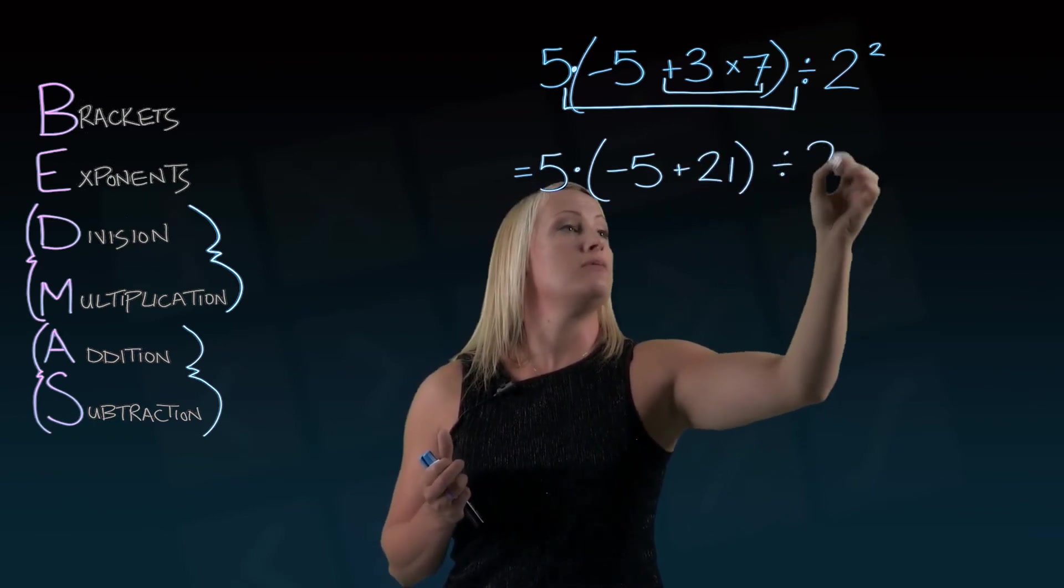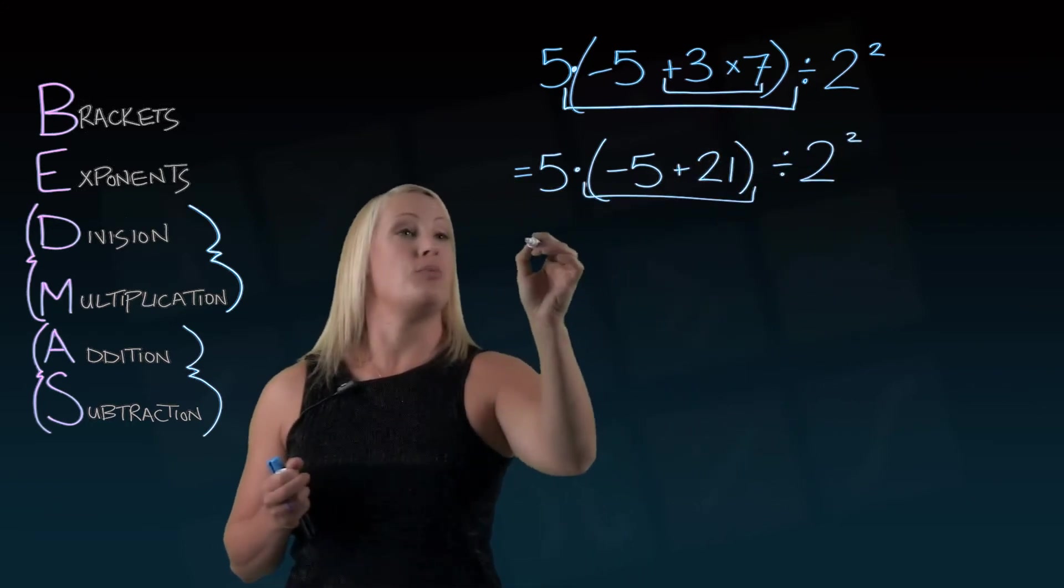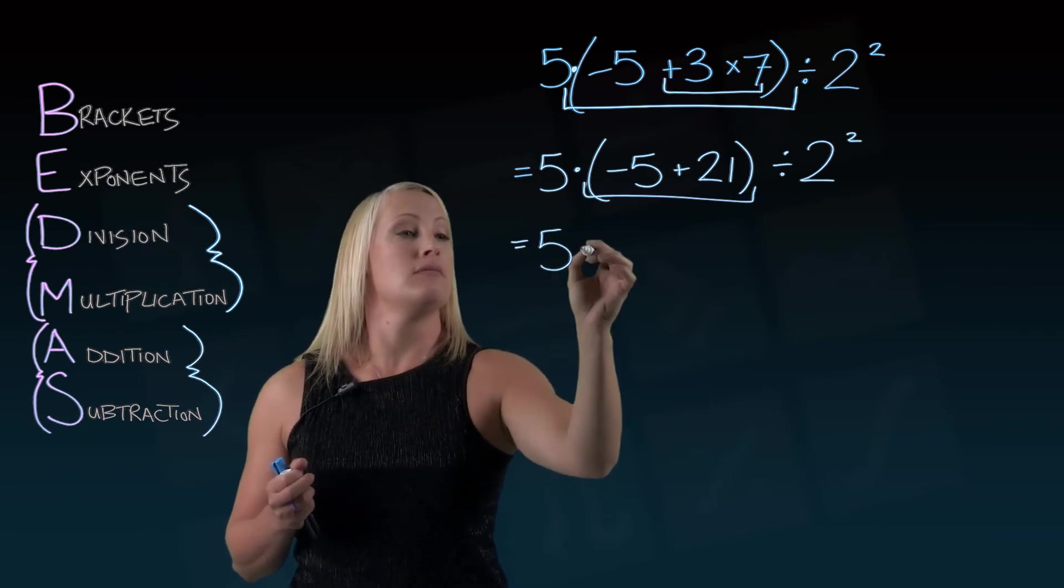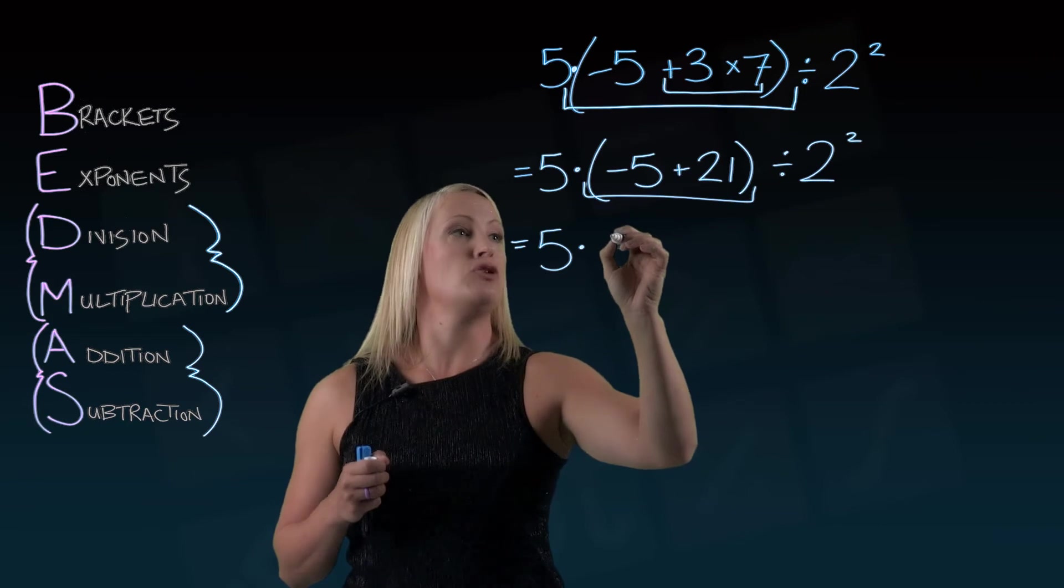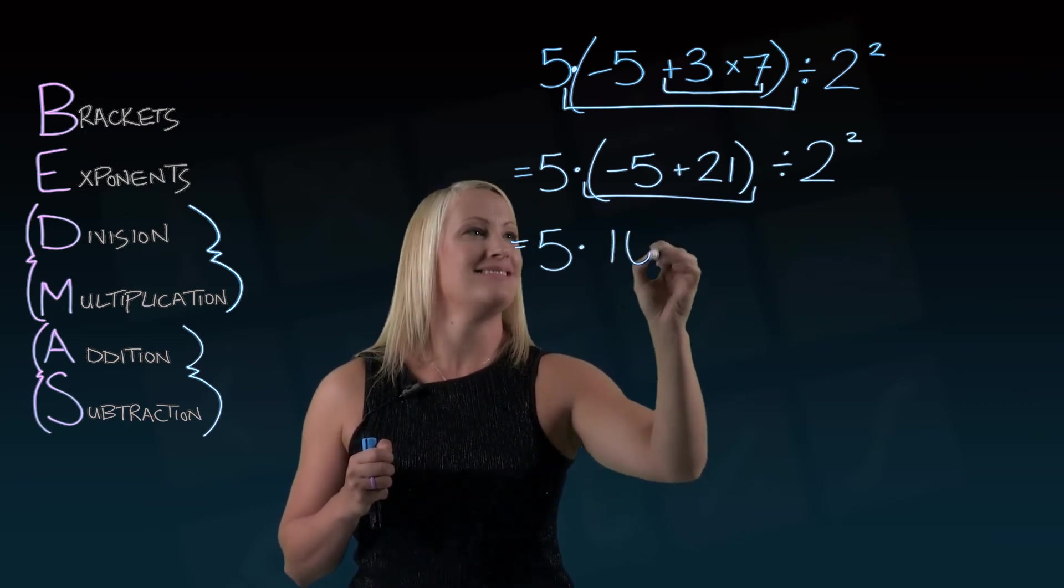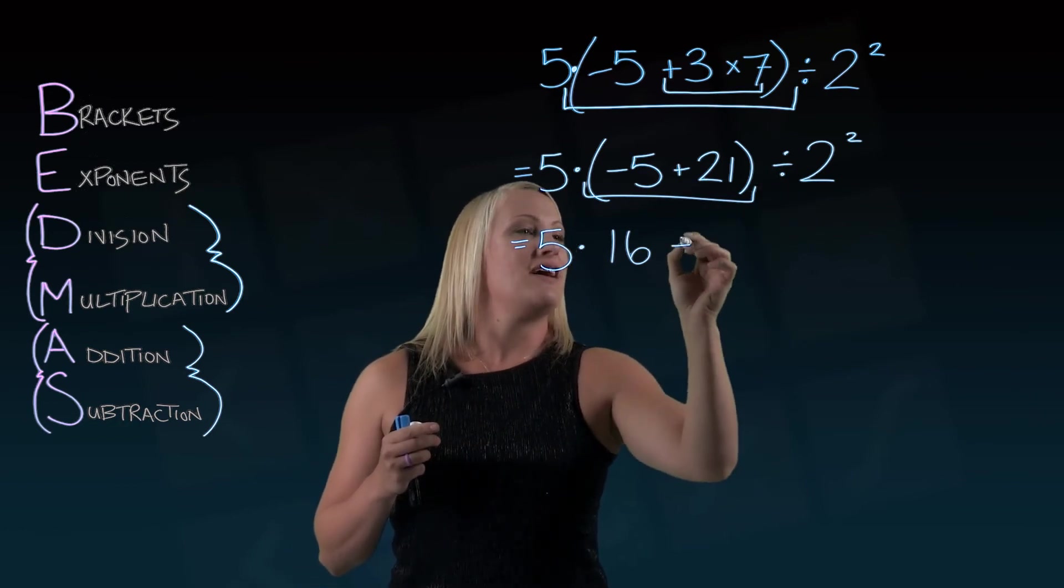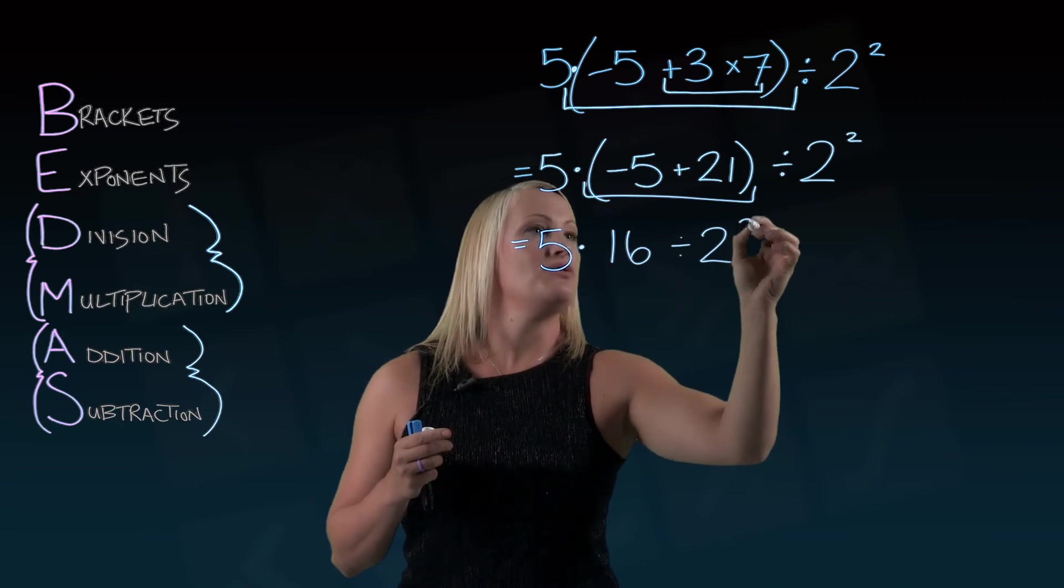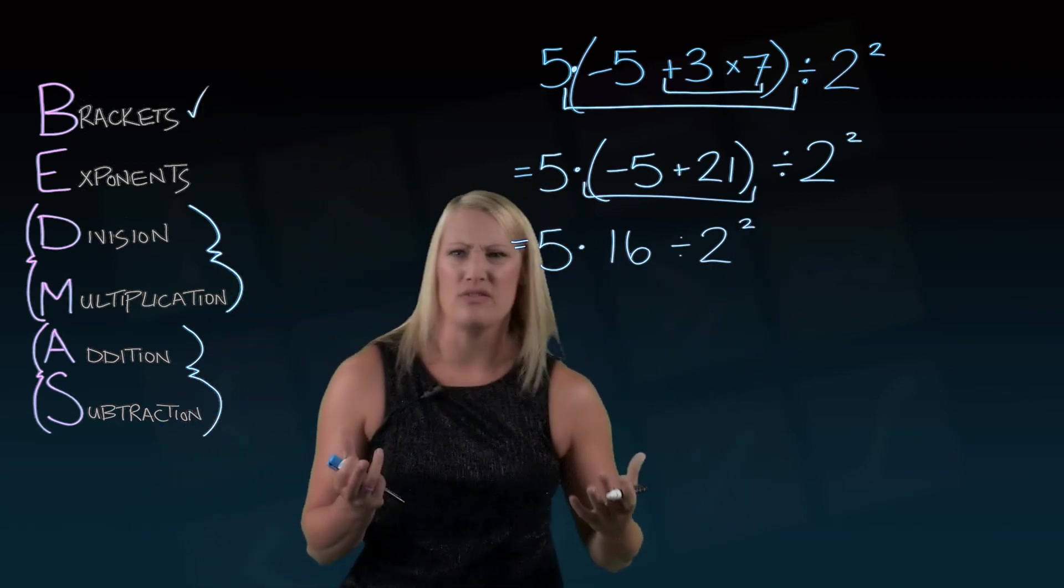Leave the rest alone. Now let's complete the inside part of this bracket. Negative 5 plus 21 which is 16. Don't you hate it when that happens? And now we've got this final divided by 2 squared. Okay. So I've dealt with brackets. There was a lot of stuff in those brackets.